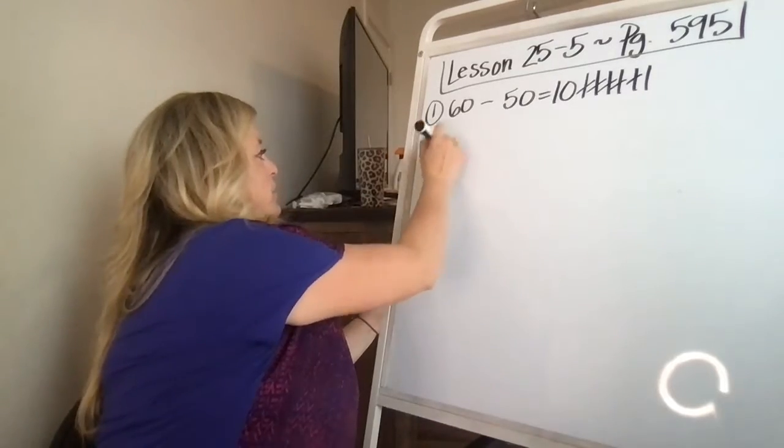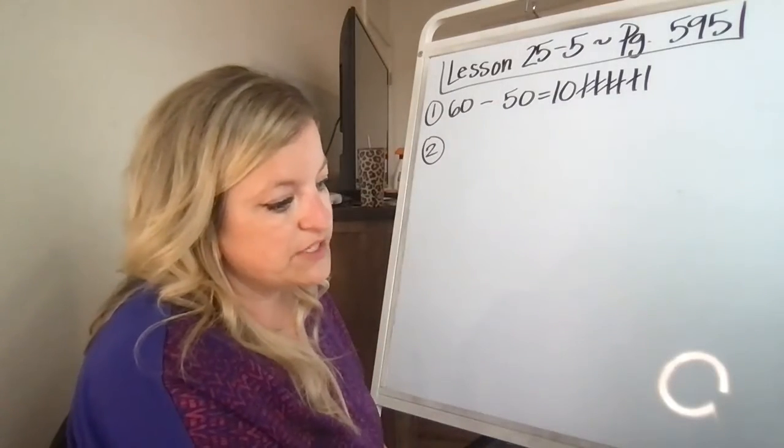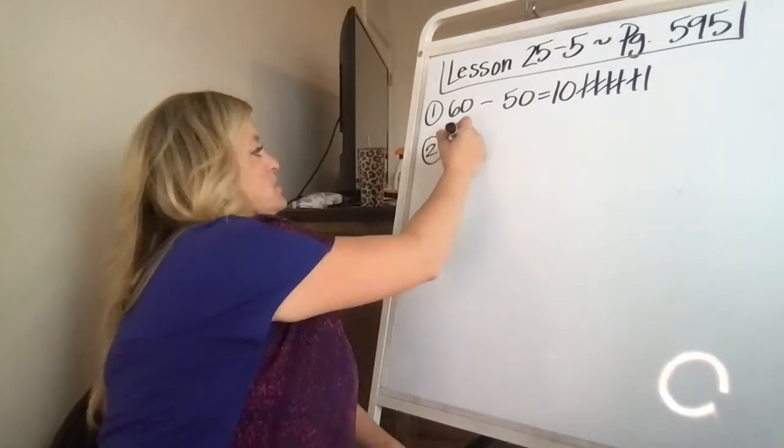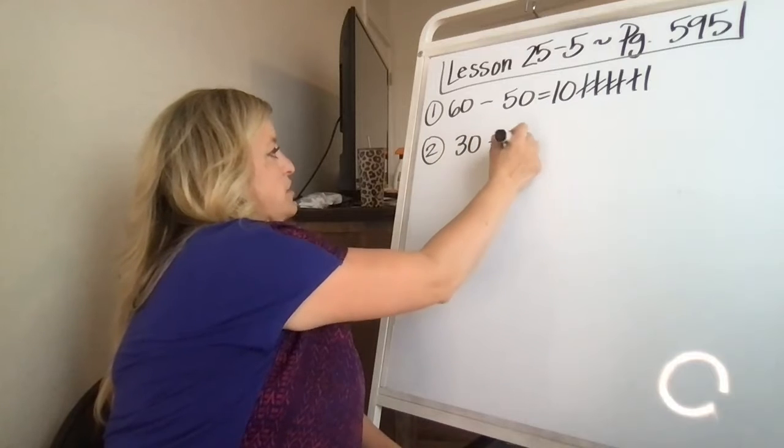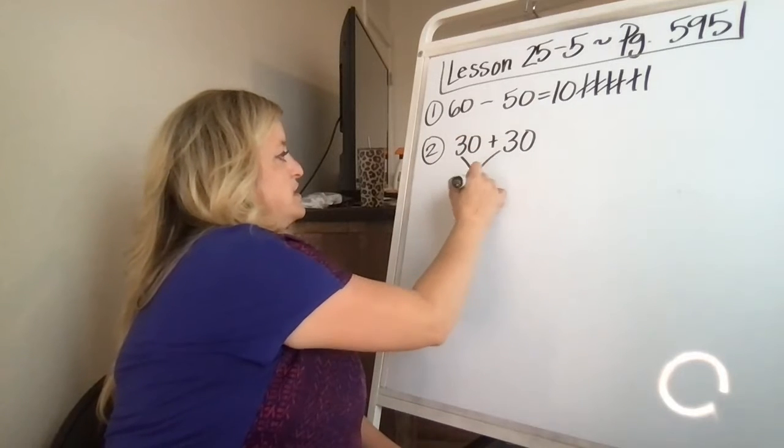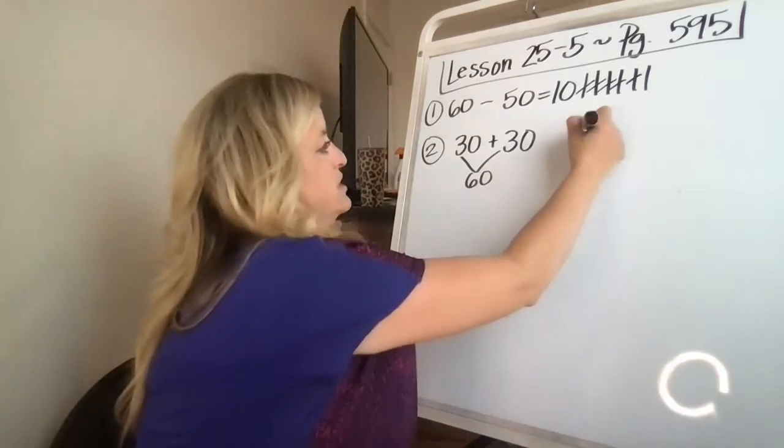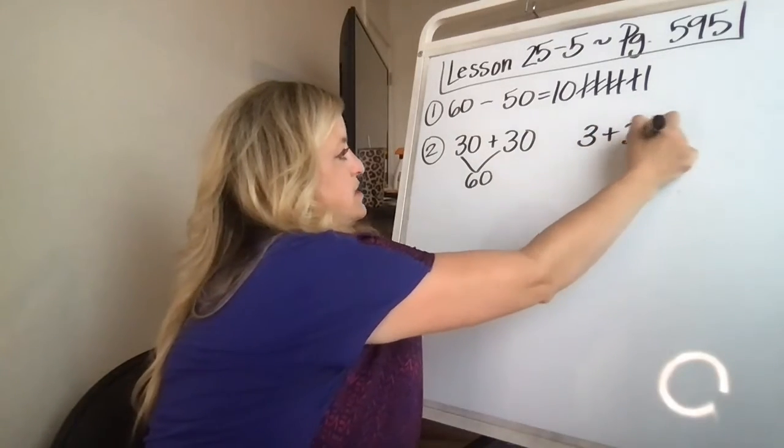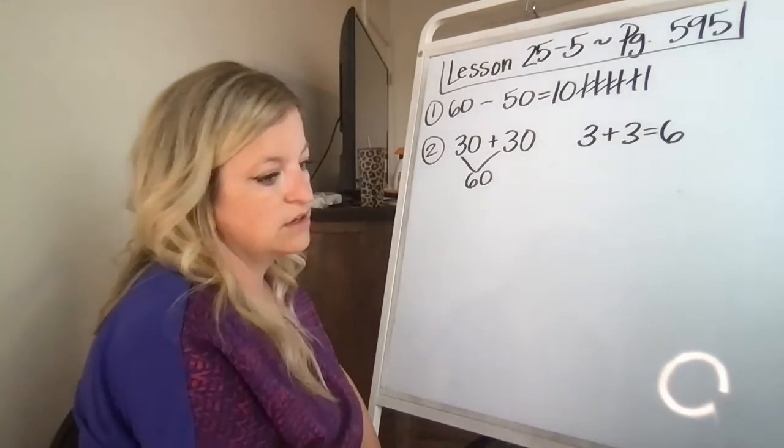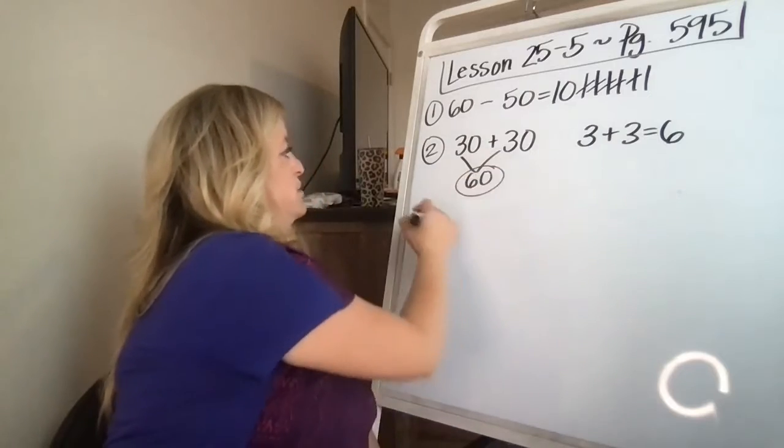Number two, 30 footballs and 30 basketballs. How many balls in all? Well, three plus three is six. It is 60. Three tens plus three tens equals six tens. So you have 60 balls.